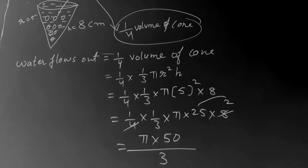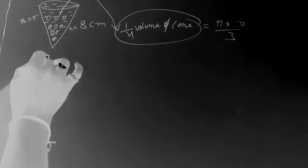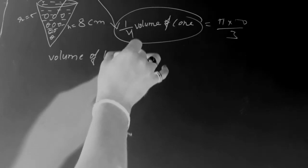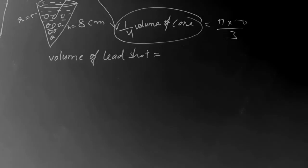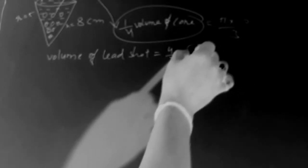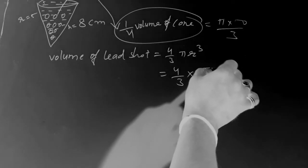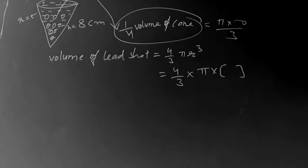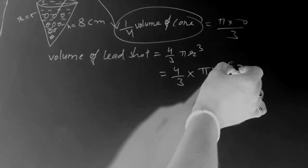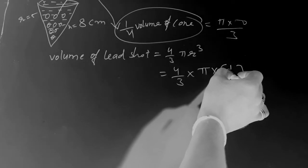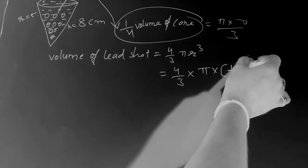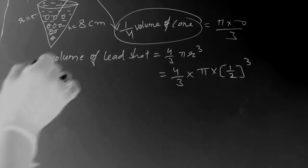Now we find the volume of a lead shot, which is the volume of a sphere. The formula is (4/3)πr³. The radius given is 0.5 centimeters, which is the same as 1/2. So we have (4/3) × π × (1/2)³.